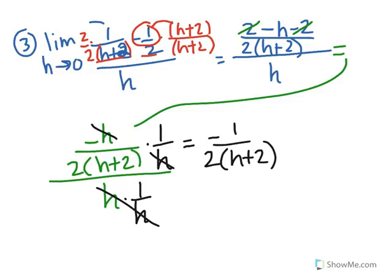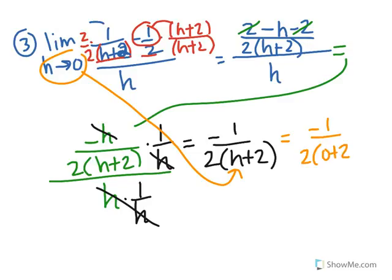At this point there's no more simplifying, so you plug in your limit. Plugging in 0, I don't get 0 over 0 like I would have before. I get negative 1 over 2 times (0 plus 2), and I end up getting negative 1 fourth as the limit.